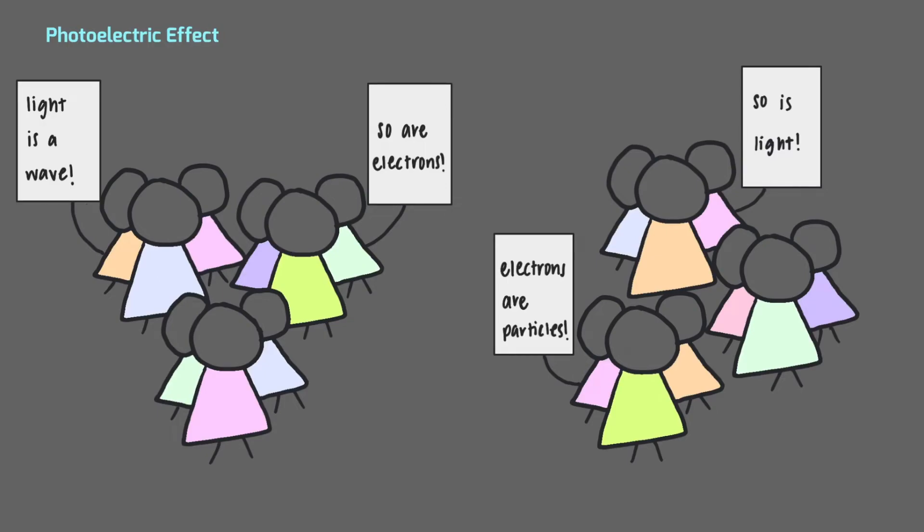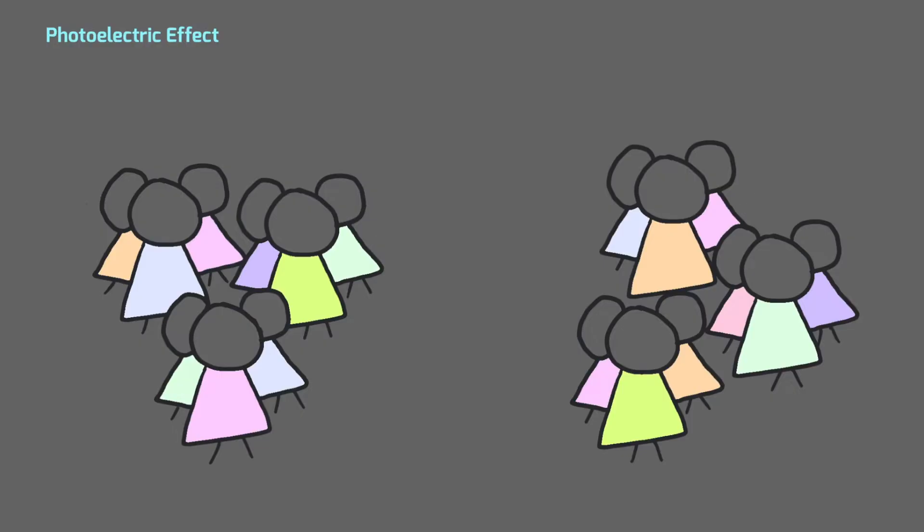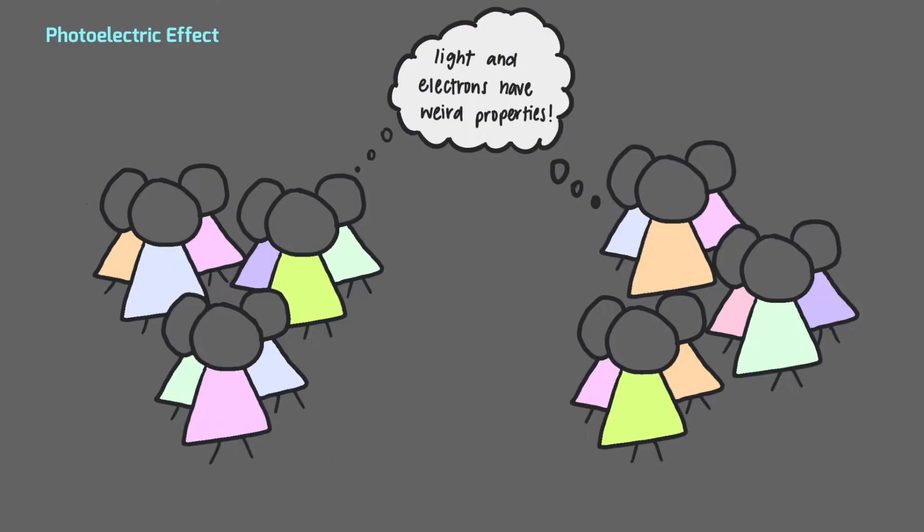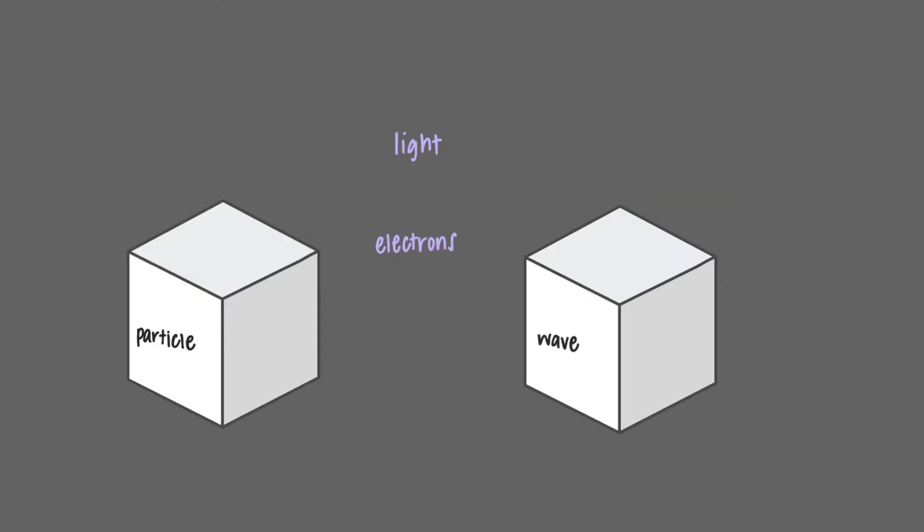During the heated debate between physicists of the 19th century over the nature of light and electrons, a question emerged. What are light and electrons made of? This question arose from the weird properties of light and electrons. These are the same weird properties that led scientists to erroneously categorize light as both particle and wave.